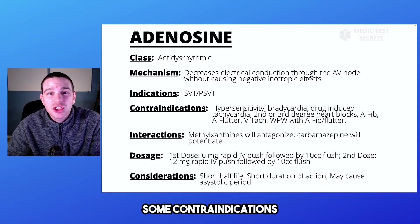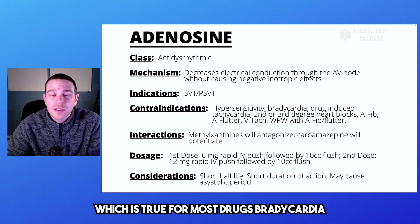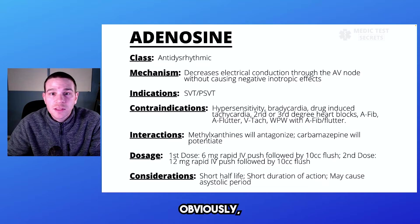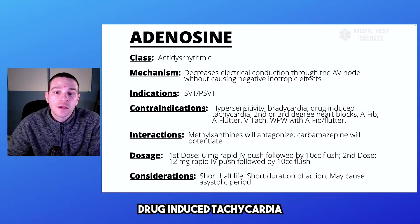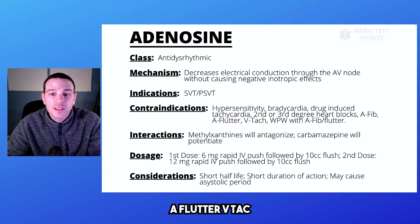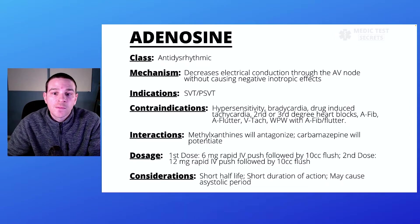Some contraindications include hypersensitivity, which is true for most drugs. Bradycardia — we don't want to give this to patients if their heart rate is already slow. Drug-induced tachycardia, second or third degree heart blocks, afib, a flutter, VTAC, and WPW with afib or a flutter.